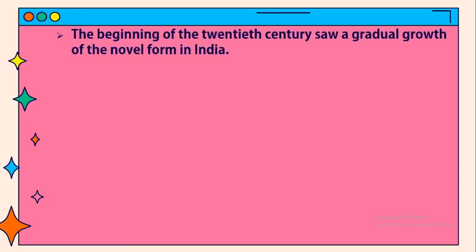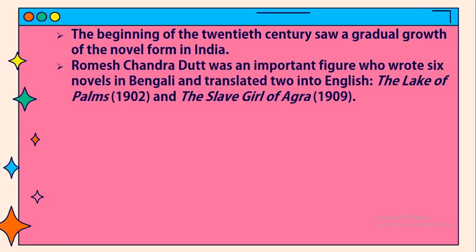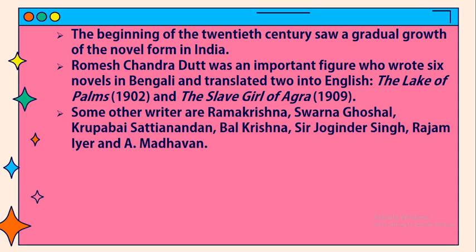The beginning of the 20th century saw a gradual growth of the novel form in India. Romesh Chunder Dutt was an important figure who wrote six novels in Bengali and translated two into English: The Lake of Palms and The Slave Girl of Agra. Other writers include Ramakrishna, Swarna Ghoshal, Krupabai Satthianadhan, B.A.L. Krishna, Sir Jogendra Singh, Raja Amir, and A. Madhavan.